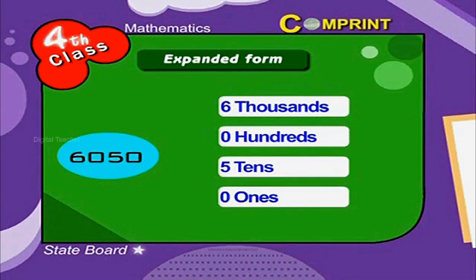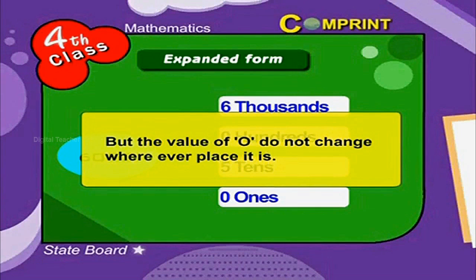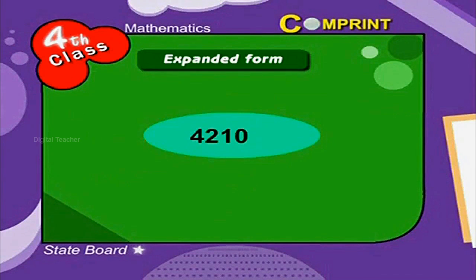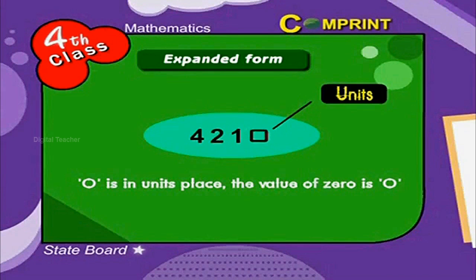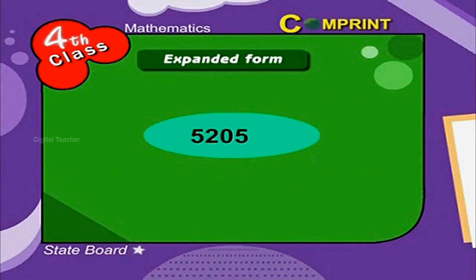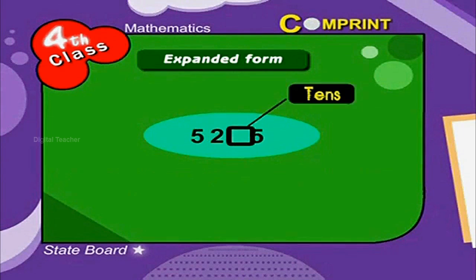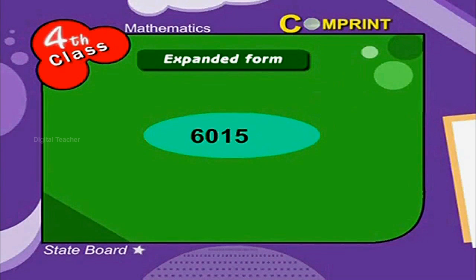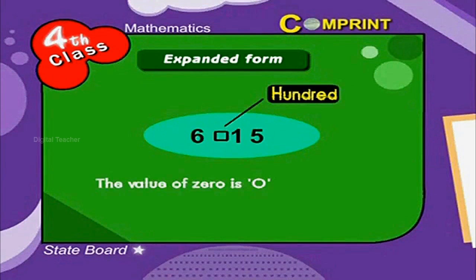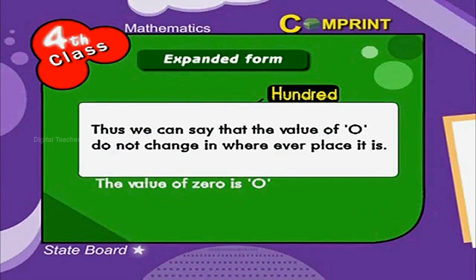The value of 0 does not change wherever place it is. For example, in 4210, 0 is in the units place and its value is 0. In the number 5205, 0 is in the tens place and its value is 0. In another number 6015, 0 is in the hundreds place, but the value of 0 is still 0. Thus, we can say that the value of 0 does not change in whatever place it is.